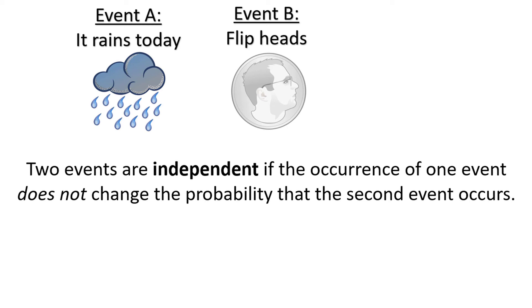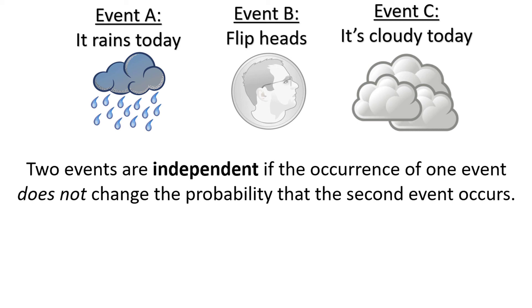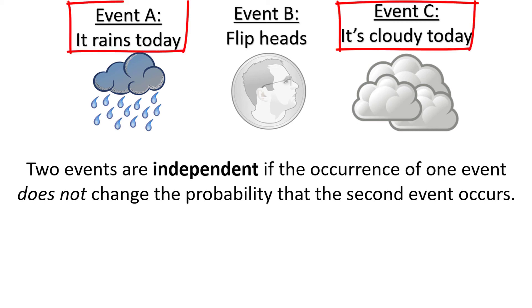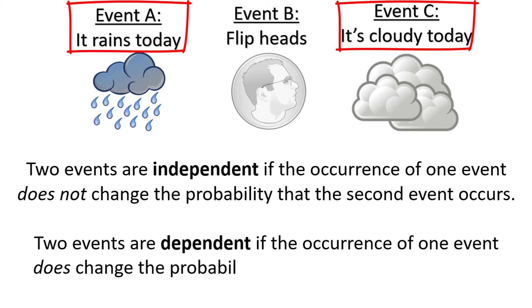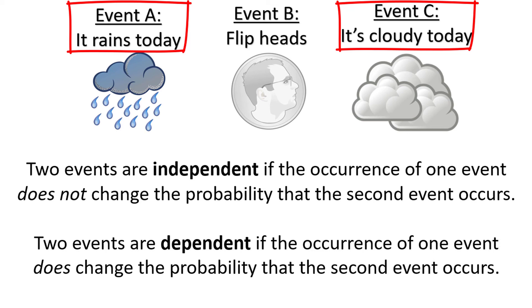What if we introduce a third event, which is that it's cloudy out today? Now consider the pair of events: it is cloudy out today, and it rains today. These two events share a relationship that was not present with the rain and the coin. If it's cloudy out, that changes the probability of it raining. The occurrence of the first event, clouds in the sky, makes the second event, rain, more likely. We say that two events are dependent if the occurrence of one event does change the probability that the second event occurs, just like there being clouds in the sky makes it more likely to see rain.